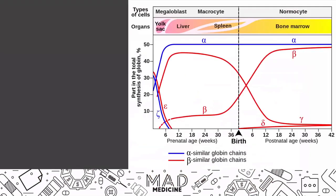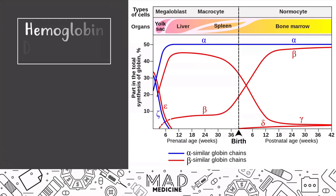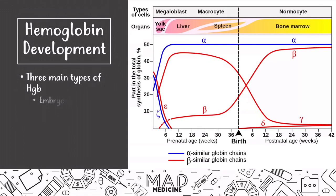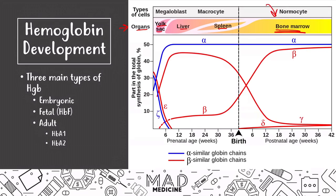You also need a good understanding of hemoglobin development. There are three main types: embryonic hemoglobin, fetal hemoglobin, and adult hemoglobin — and within the adult stage you also have hemoglobin A1 and A2. Red blood cells are formed in four main locations: the yolk sac, the liver, the spleen, and bone marrow. Most production of RBCs and hemoglobin occurs in the bone marrow.